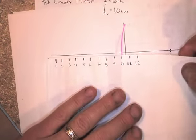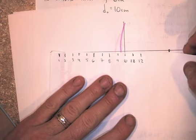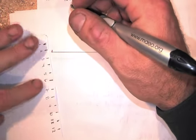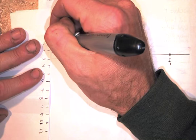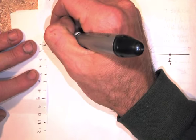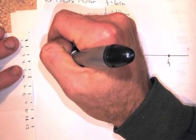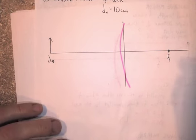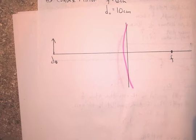And then our object, we're always going to put our object on the left side, and we're going to put that at 10. I'll make it 2 centimeters tall again. There's our D-O. That's our F. We're going to follow the same rules. Well, it's actually not, it's similar rules. Let's write them down.